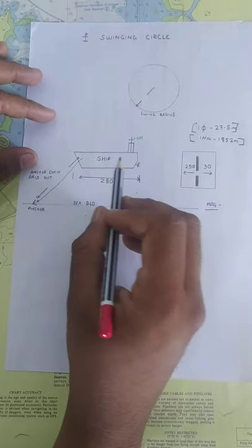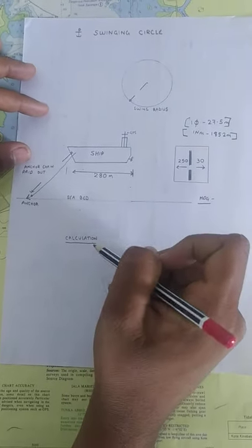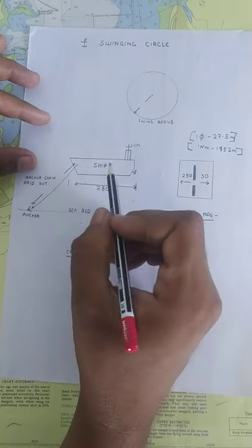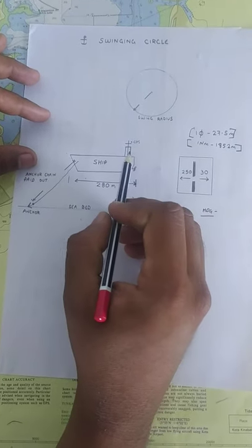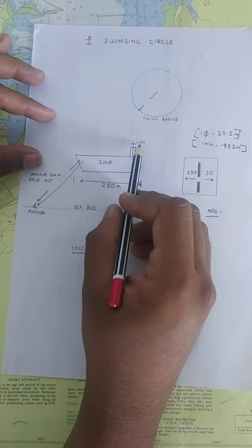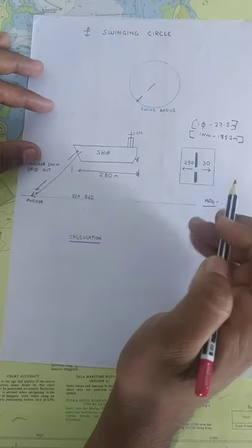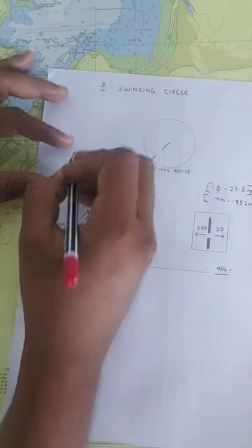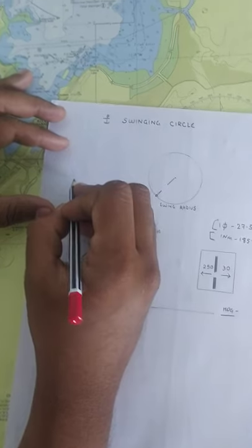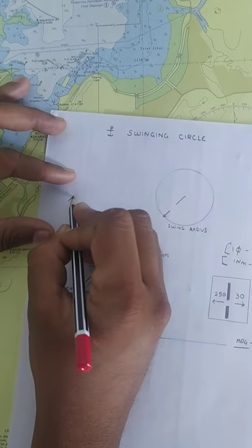So, before you calculate the swinging circle, let's first calculate how to convert the GPS position to the forward of the ship. For that, once you let go of the anchor, take the ship's heading.